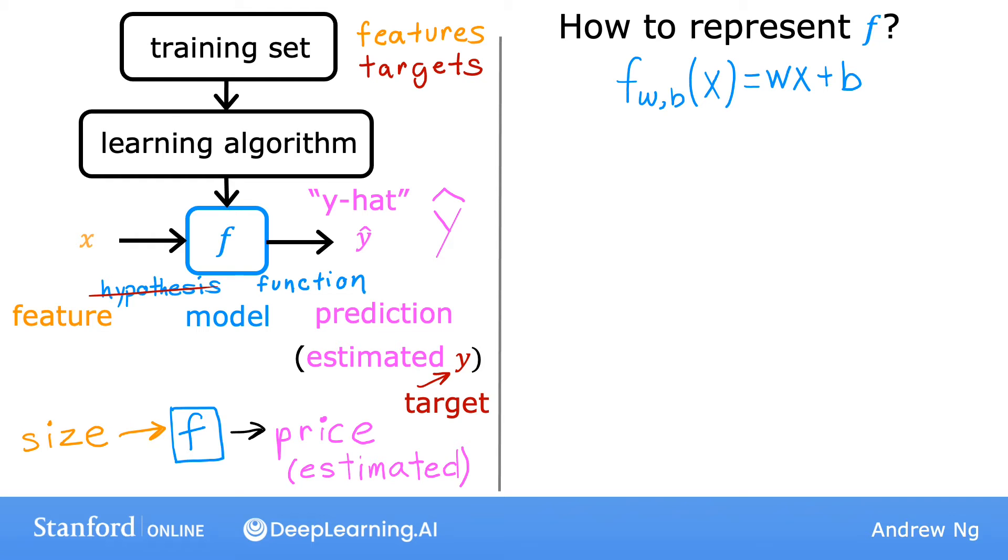As an alternative to writing this f w comma b of x, I'll sometimes just write f of x without explicitly including w and b in the subscript. It's just a simpler notation, but means exactly the same thing as f_w,b of x.